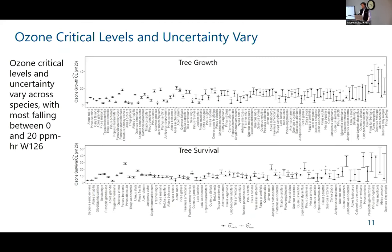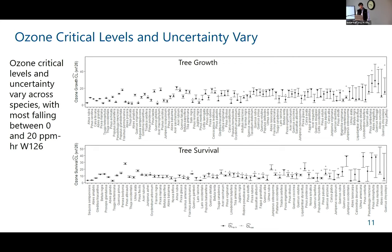Using this approach, we were able to quantify the critical level for ozone for each tree species in our input dataset. The main takeaway is that critical levels generally fall around 5 to 15, up to 20, parts per million hours of ozone W126 for both tree growth and tree survival. The uncertainty of these critical levels is moderate — around the range of 10 parts per million hours for most tree species — though some species show very low uncertainty while others show very high uncertainty.